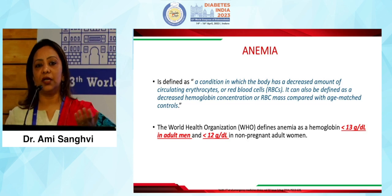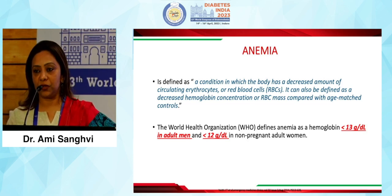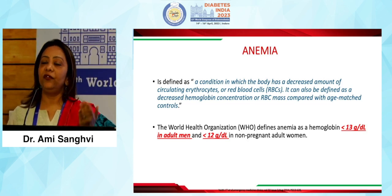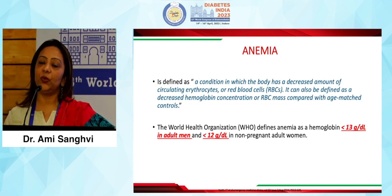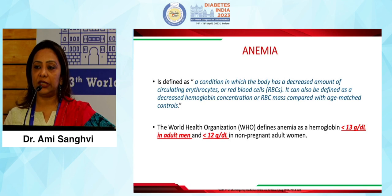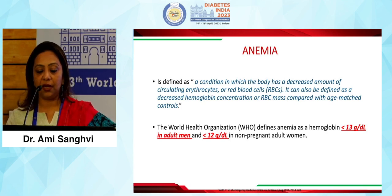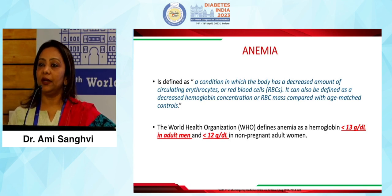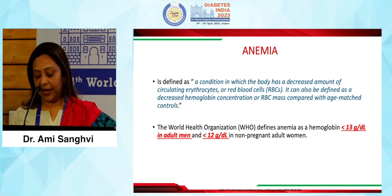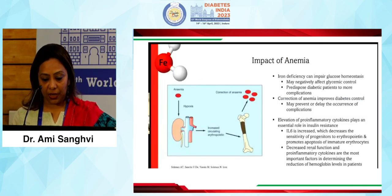When we look at what the WHO has to say: if your hemoglobin level is below 13 g/dL in males and below 12 g/dL in non-pregnant adult females, then it is defined as anemia.